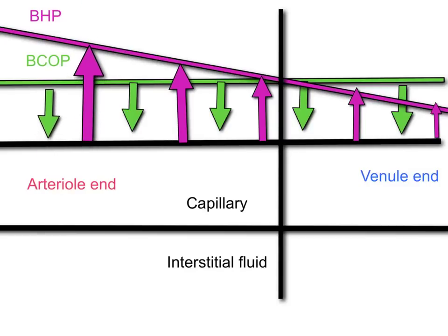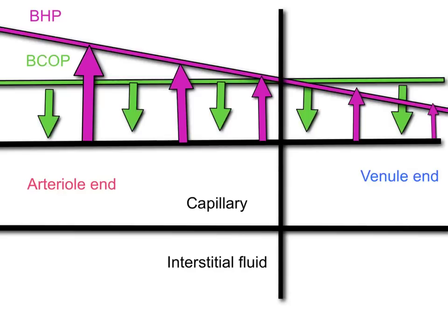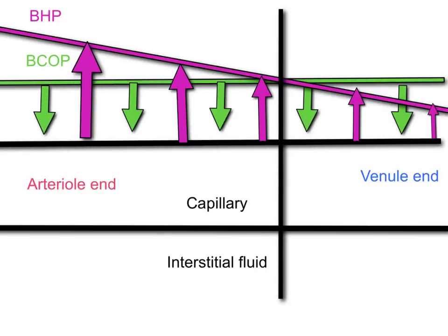At the venule end, the blood colloid osmotic pressure is greater than the blood hydrostatic pressure. At the arterial end, this outward force is greater than the inward force, so you are going to have a net movement out.